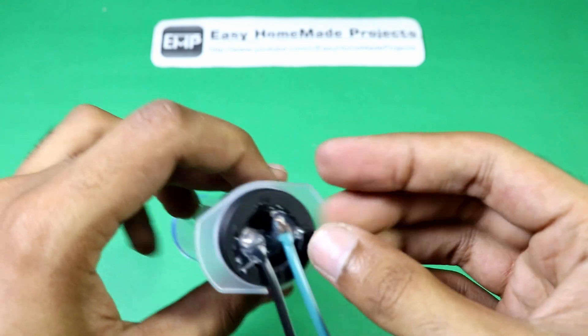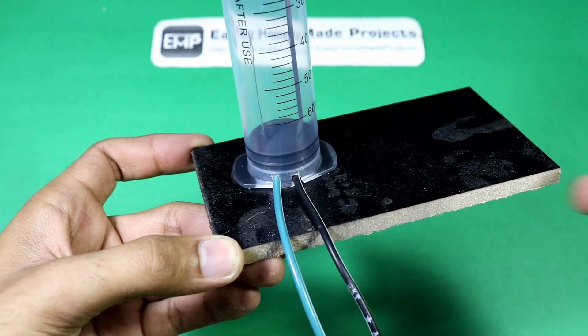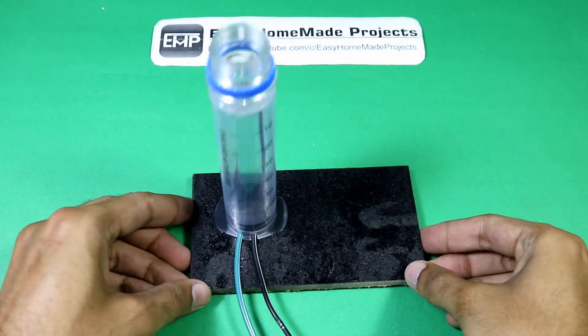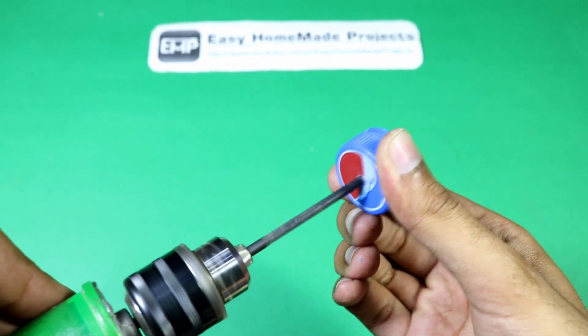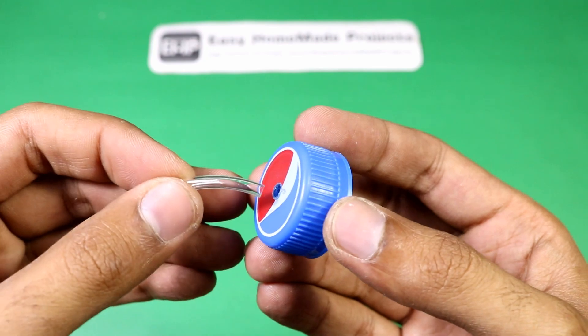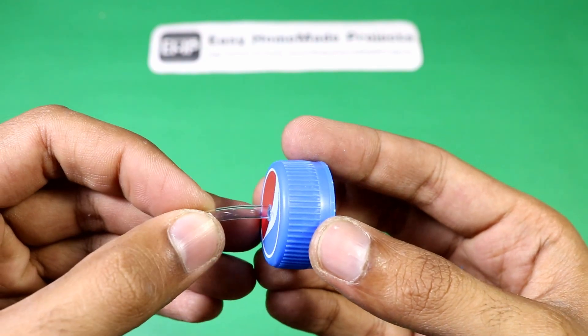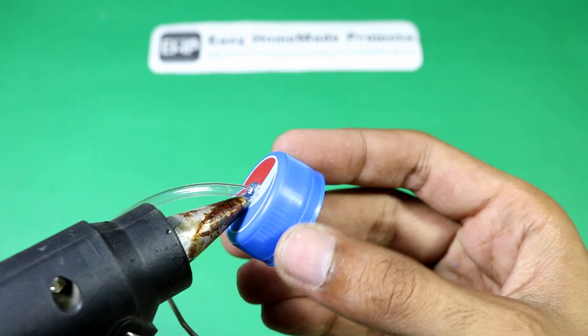And fix the syringe on the base. Make a three millimeter hole in the bottle lid, insert one end of the tube in it, and fix it using some hot glue.